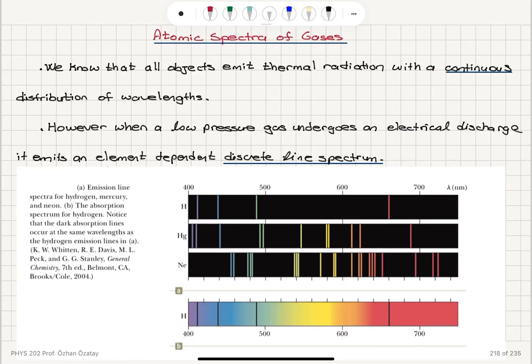Atomic spectra of gases. We know that all objects emit thermal radiation with a continuous distribution of wavelengths. The power radiated is given by Stefan's law, sigma AE T to the fourth power, so it varies as temperature to the fourth power.